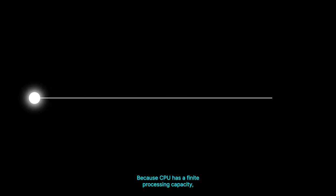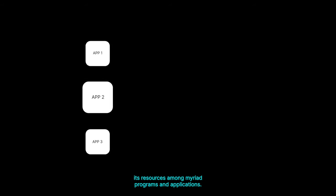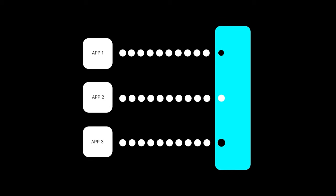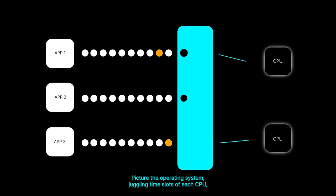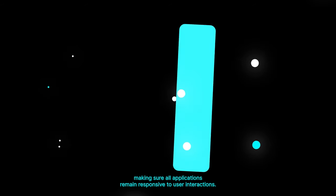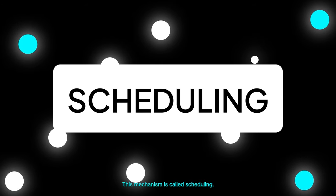Because a CPU has a finite processing capacity, the operating system plays a fundamental role in distributing its resources among myriad programs and applications. Picture the operating system juggling time slots of each CPU, making sure all applications remain responsive to user interactions. This mechanism is called scheduling.